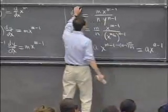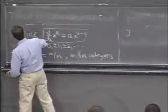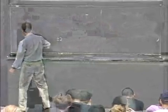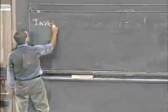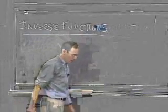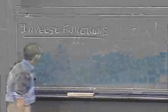So this implicit differentiation method has one very important application to finding inverse functions, or finding derivatives of inverse functions. So let's talk about that next.